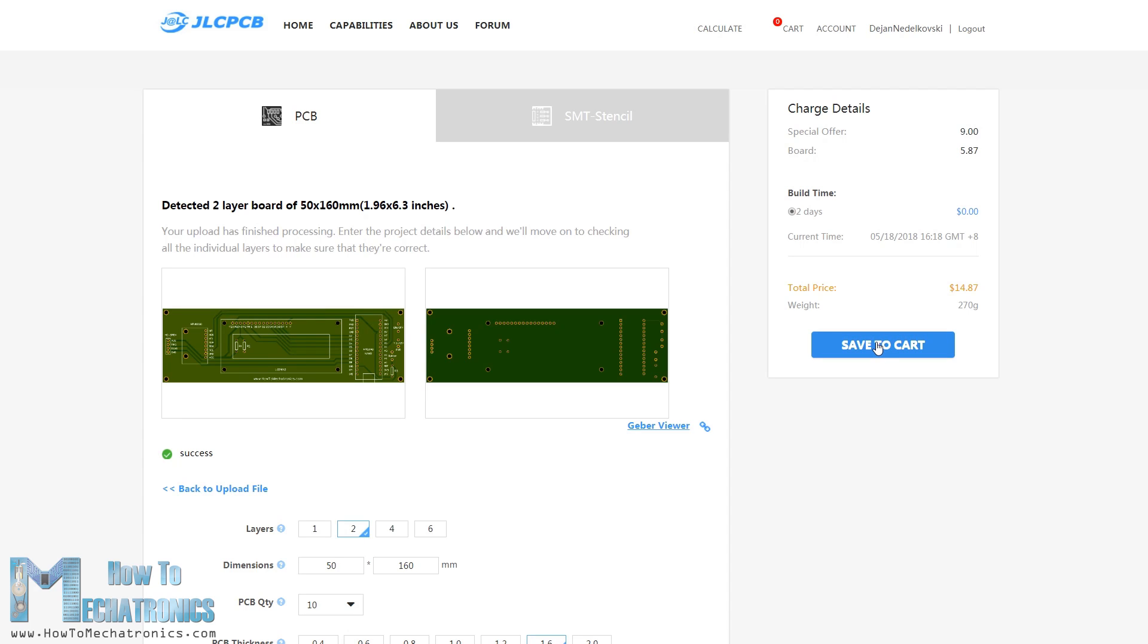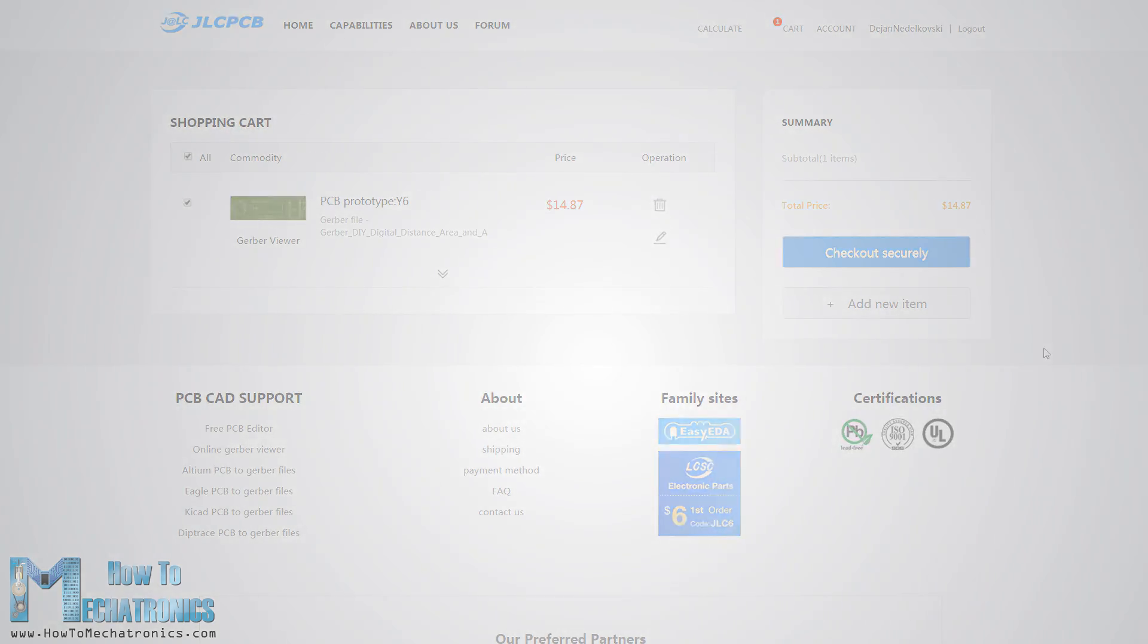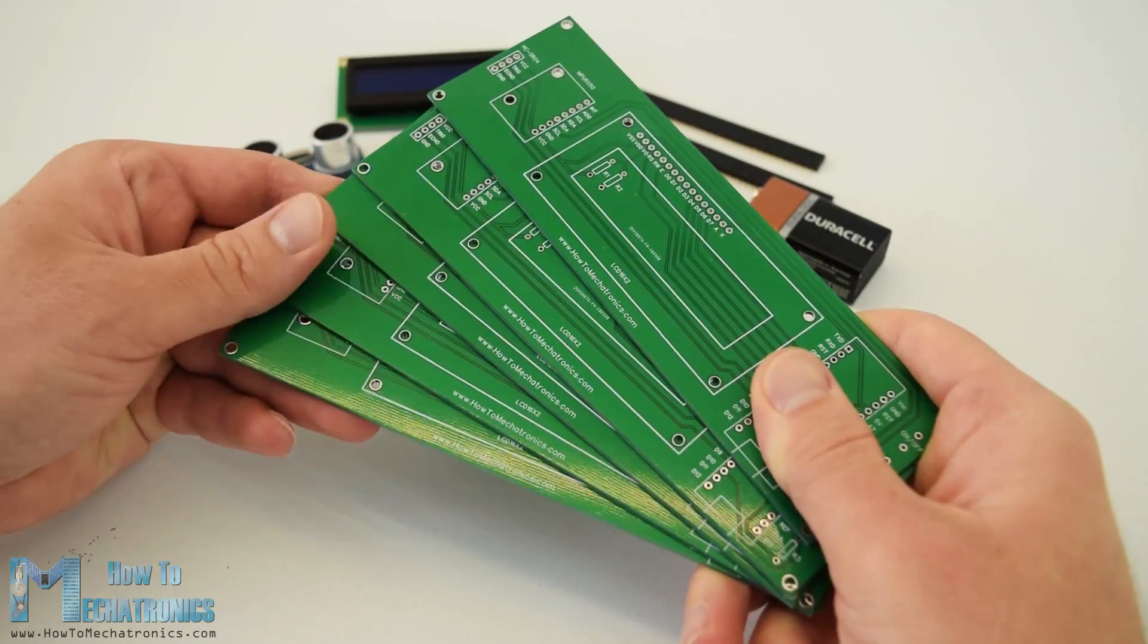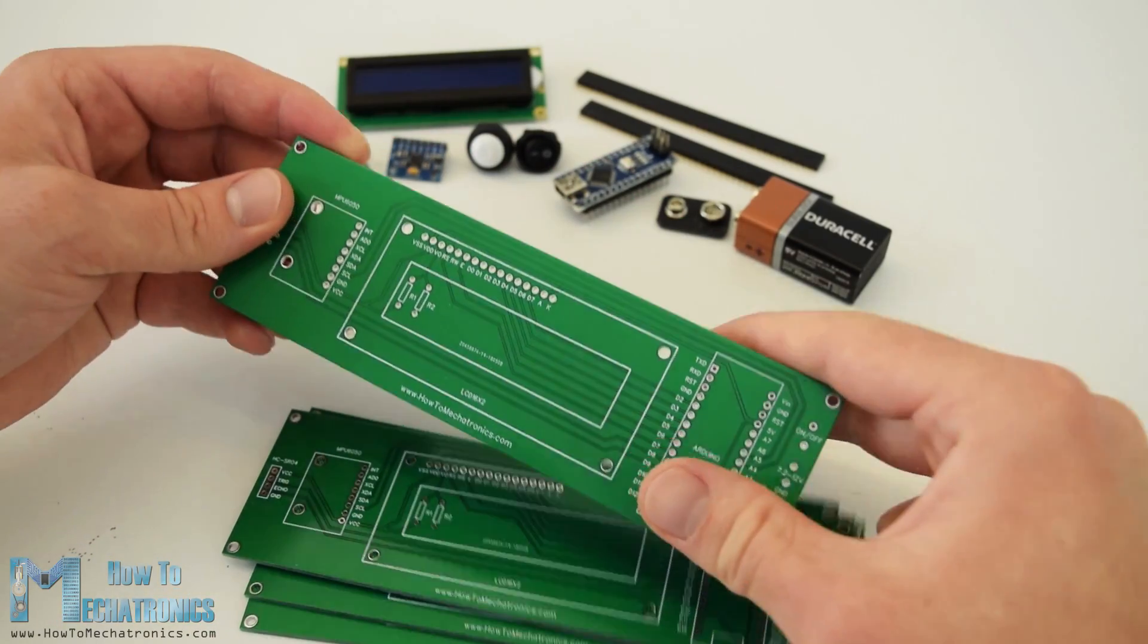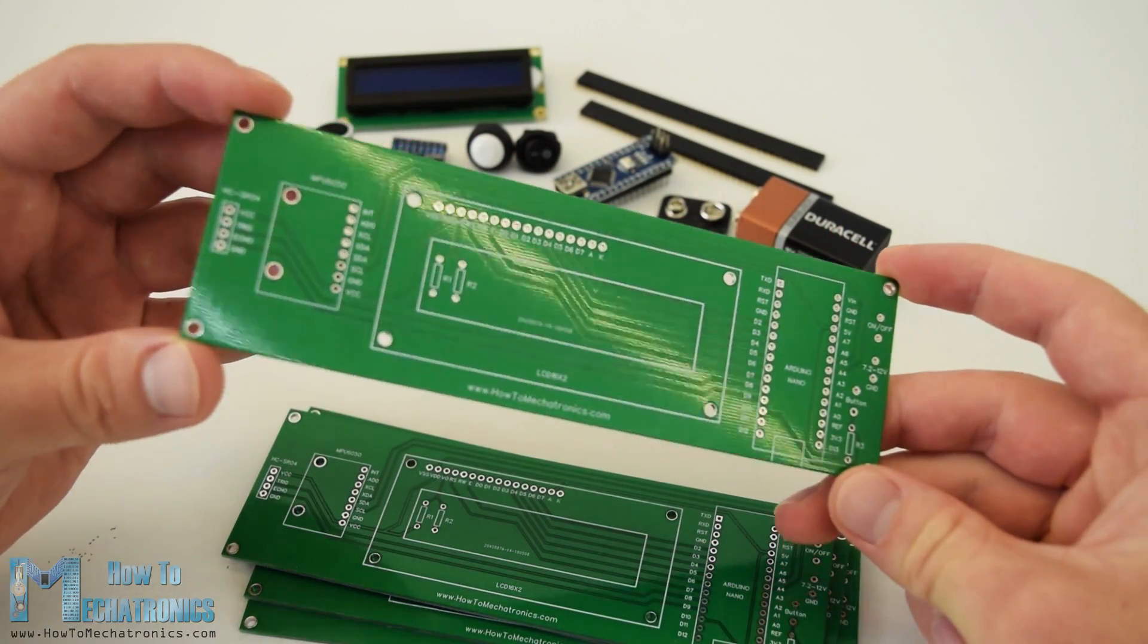Note that if it's your first order from JLCPCB you can get up to 10 PCBs for only $2. After several days the PCBs have arrived. The quality of the PCB is great and everything is exactly the same as in the design.